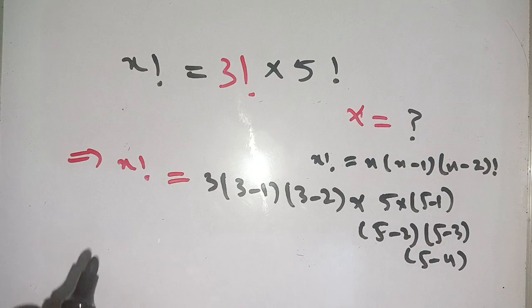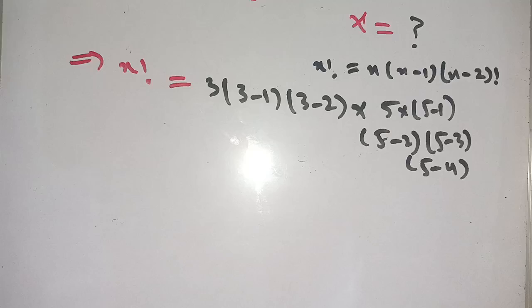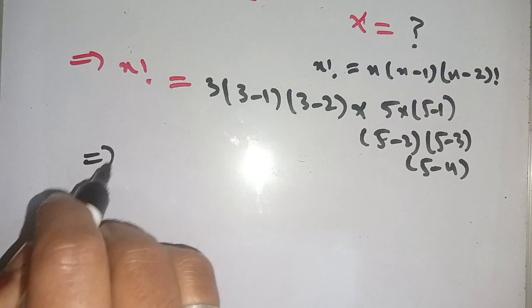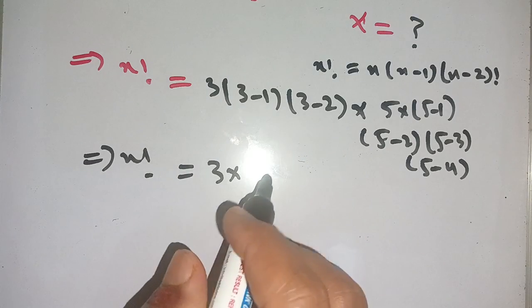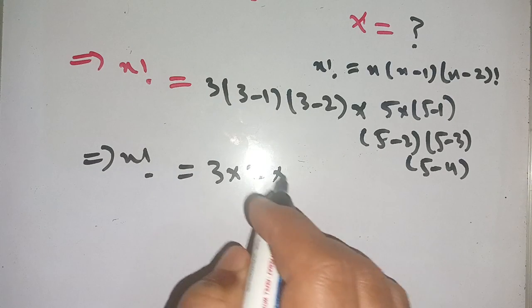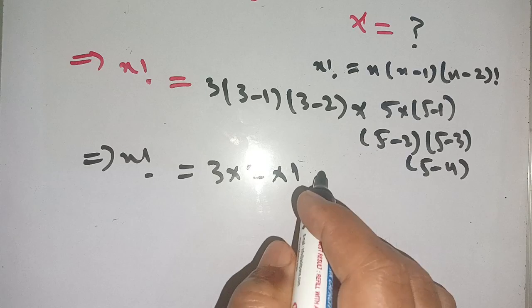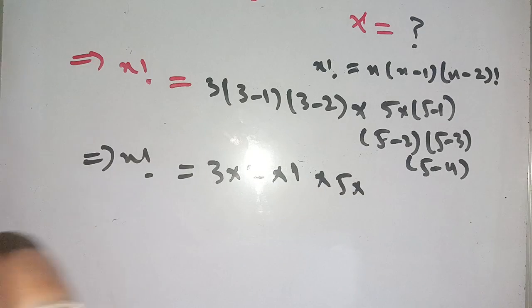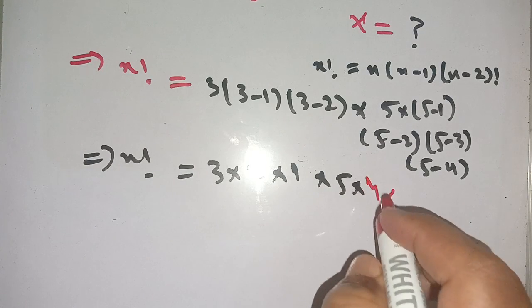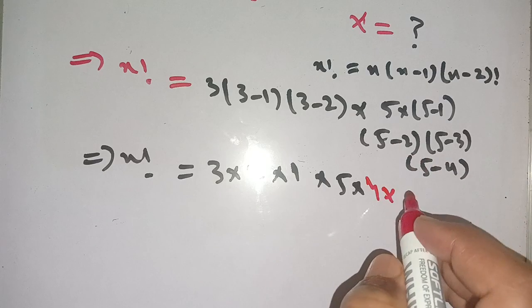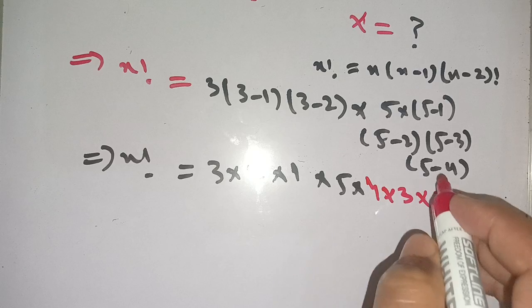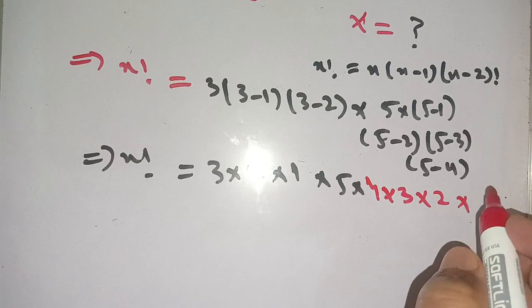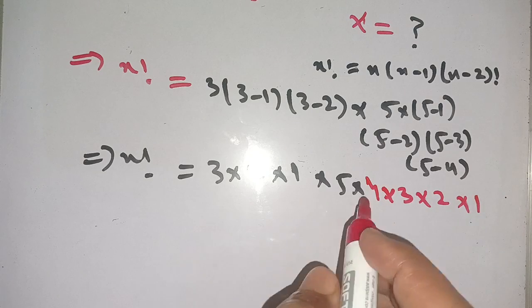Now we can rewrite this as x factorial is equal to 3 times 3 minus 1, it becomes 2, times 3 minus 2, it becomes 1, times 5 times 5 minus 1, it becomes 4, times 5 minus 2, it becomes 3, times 5 minus 3, it becomes 2, times 5 minus 4, it becomes 1.